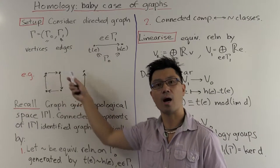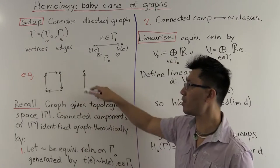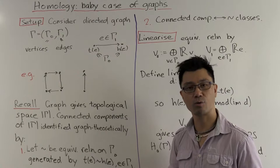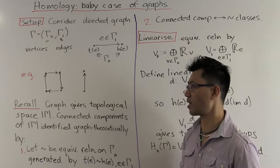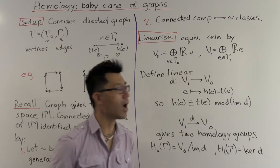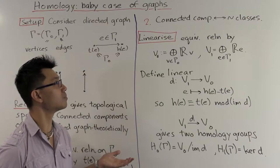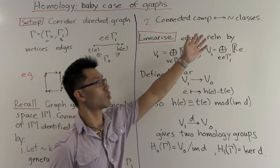So in this case, all these four points are equivalent to each other. So that's one connected component. And these two vertices are equivalent to each other. And that gives another connected component. So that's how the graph can be used to capture the connected components as the equivalence classes.